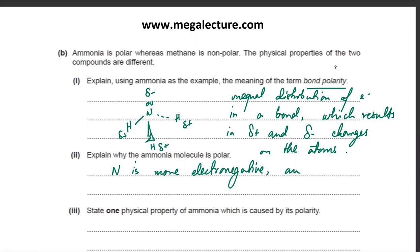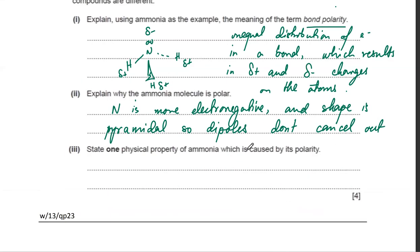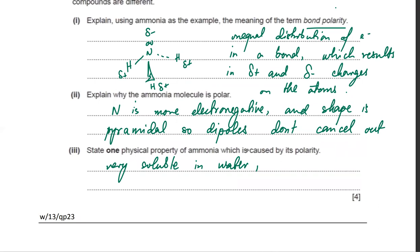Ammonia is polar because N is more electronegative, and the shape is pyramidal so the dipoles don't cancel out. One physical property caused by its polarity is that ammonia is very soluble in water — it can form hydrogen bonds with water — and it also has high melting and boiling points.